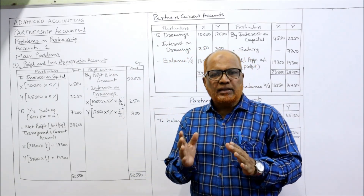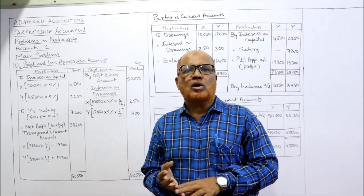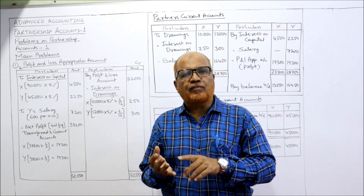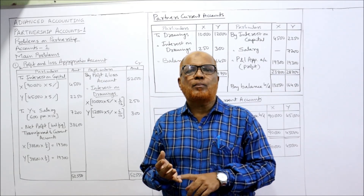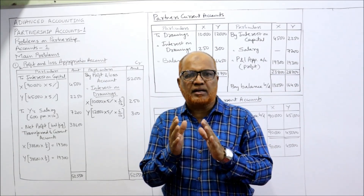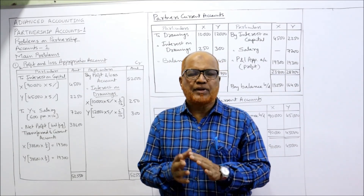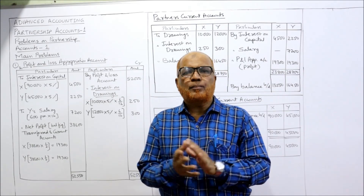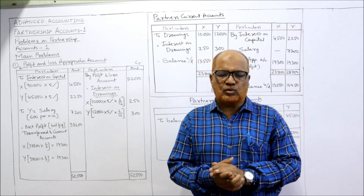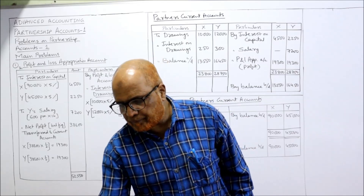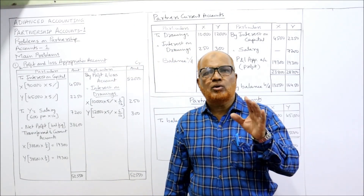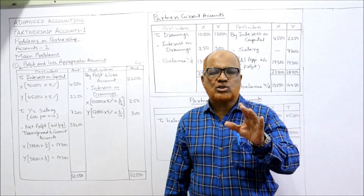In this chapter we have problems on preparing the capital account, profit and loss appropriation account, admission of partner, retirement, and death of a partner. These are the points we are going to cover in all the coming videos. Before starting the main problems, I expect that you have already watched all the short questions videos.